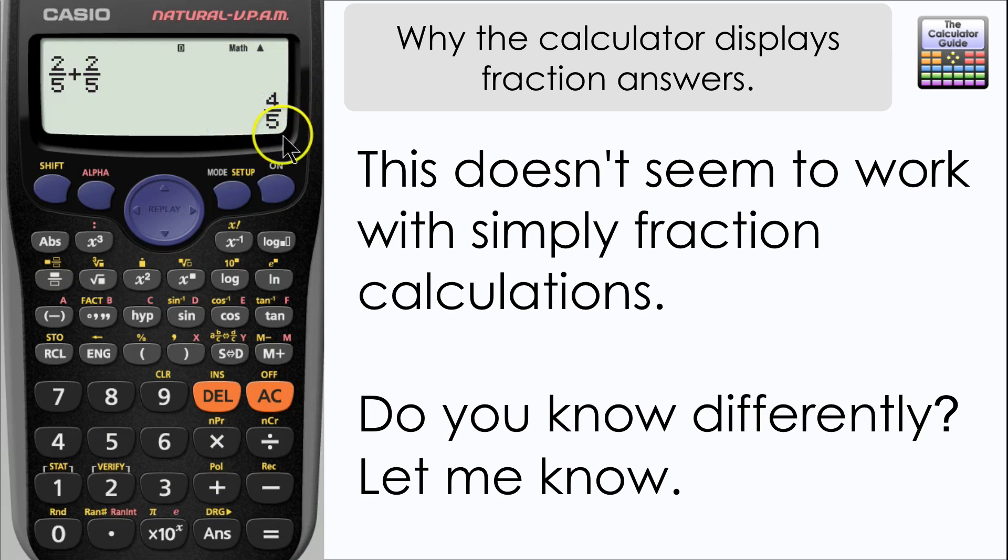Now I've done a little bit of exploring. I can't find another way of displaying the answer so that you permanently get a decimal no matter what calculation you do. I'm more than willing to be proved wrong, so if you do know a way, please let me know in the comments below.